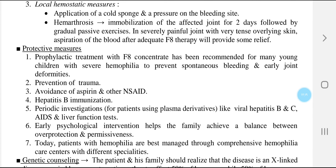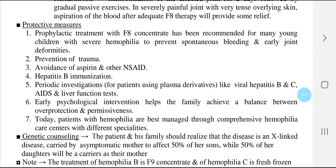Protective measures in hemophilia include prophylactic treatment with factor 8 concentrate, recommended for many young children with severe hemophilia to prevent spontaneous bleeding and early joint deformities. Prevention of trauma, avoidance of aspirin and other non-steroidal anti-inflammatory drugs, hepatitis B immunization, and periodic investigations for patients using plasma derivatives — including viral hepatitis B and C, AIDS, and liver function tests. Early psychological intervention helps the family achieve a balance between overprotection and permissiveness.